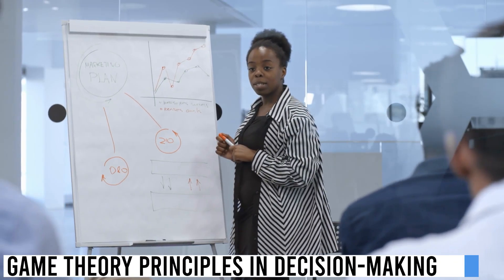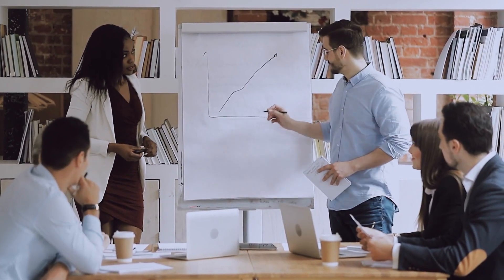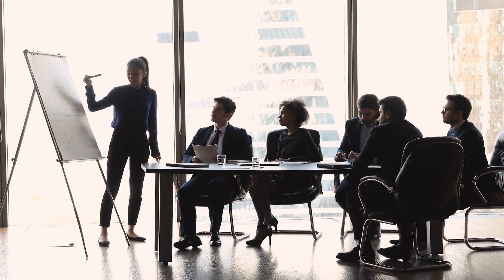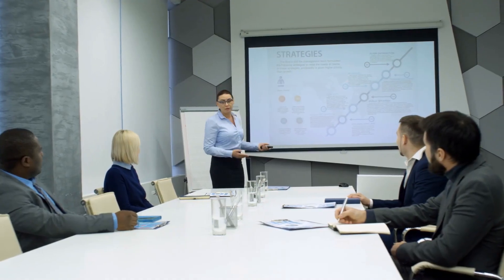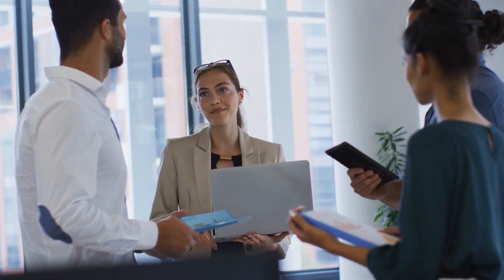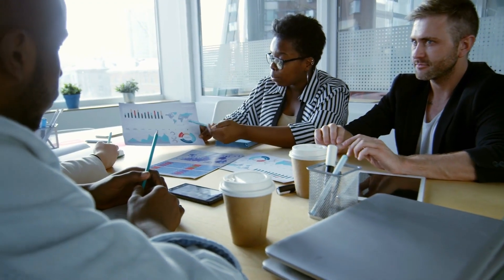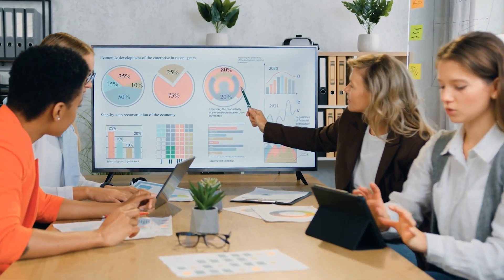Game theory principles in decision making. Let's explore how game theory principles can be applied to quantitative decision making. One important concept is the Nash Equilibrium, which represents a stable situation where no player can unilaterally change their strategy to improve their outcome, assuming all other players' strategies remain constant. By considering the Nash Equilibrium and potential strategies of other players, decision makers can anticipate and plan for different scenarios. They can analyze the potential outcomes, assess the risks and rewards associated with each strategy, and make decisions that maximize their own benefits while considering the actions of others.